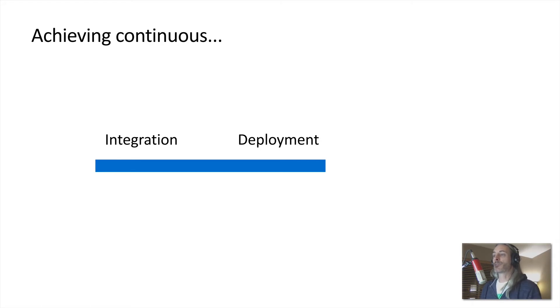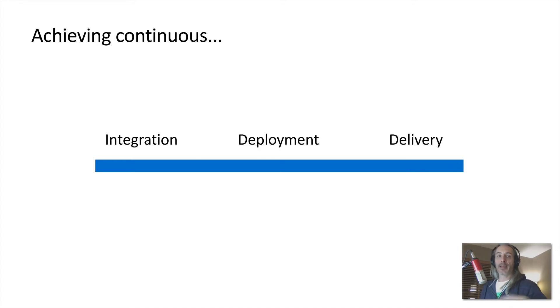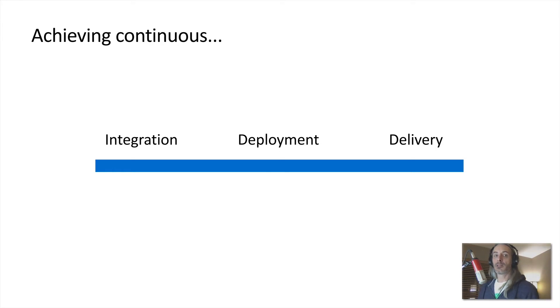Next, continuous deployment produces software in short cycles such that it can be reliably released using automation. When we reach continuous deployment we can do these things in short cycles in an automated way. Then the combination of continuous integration plus continuous deployment gives us a continuous delivery system.